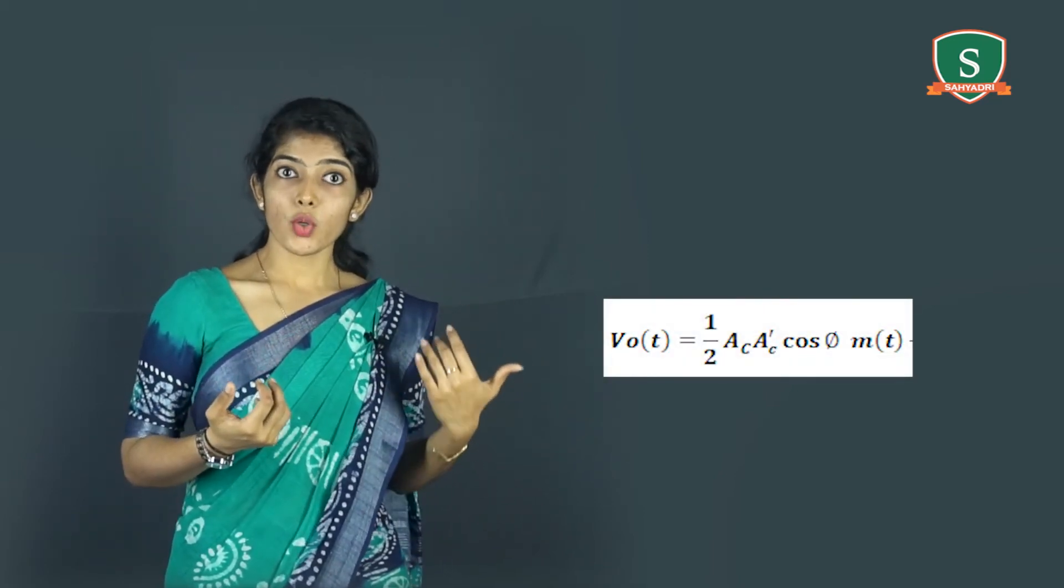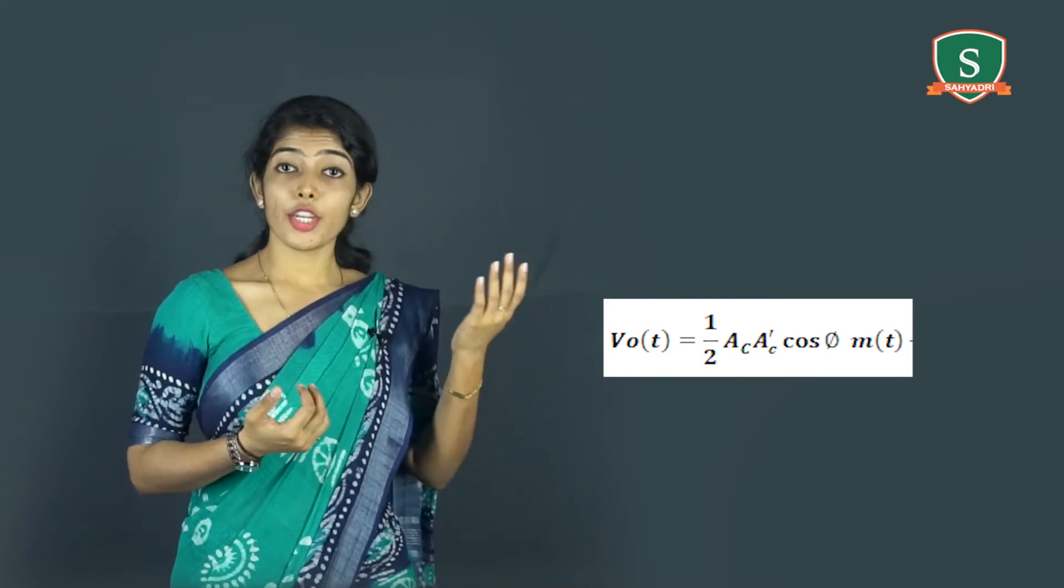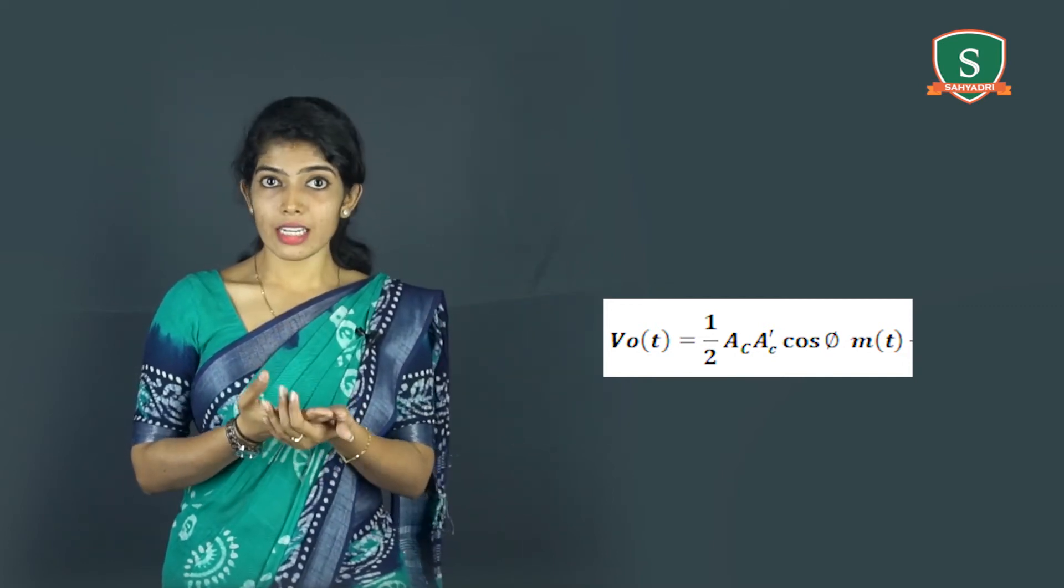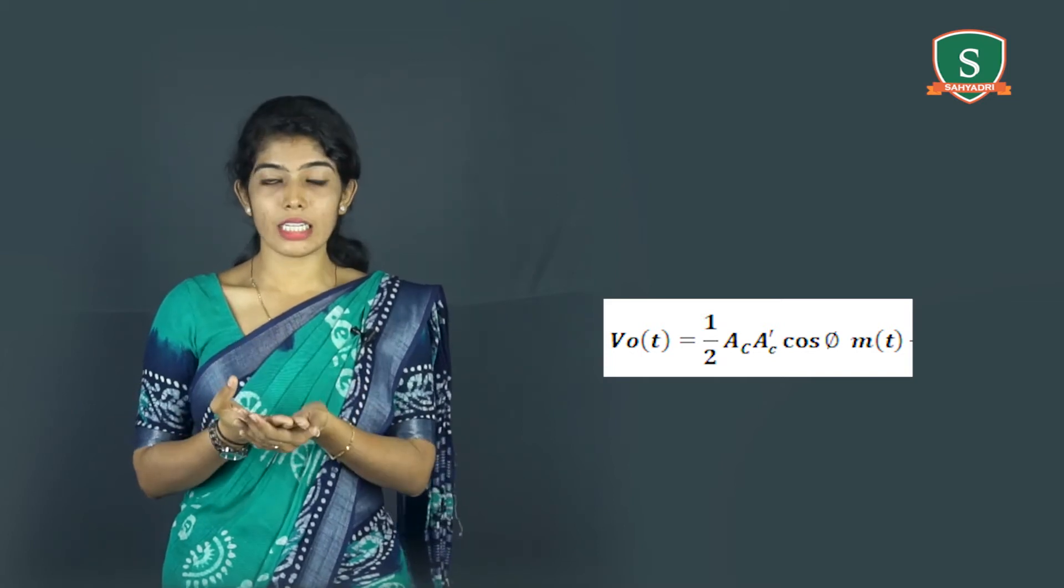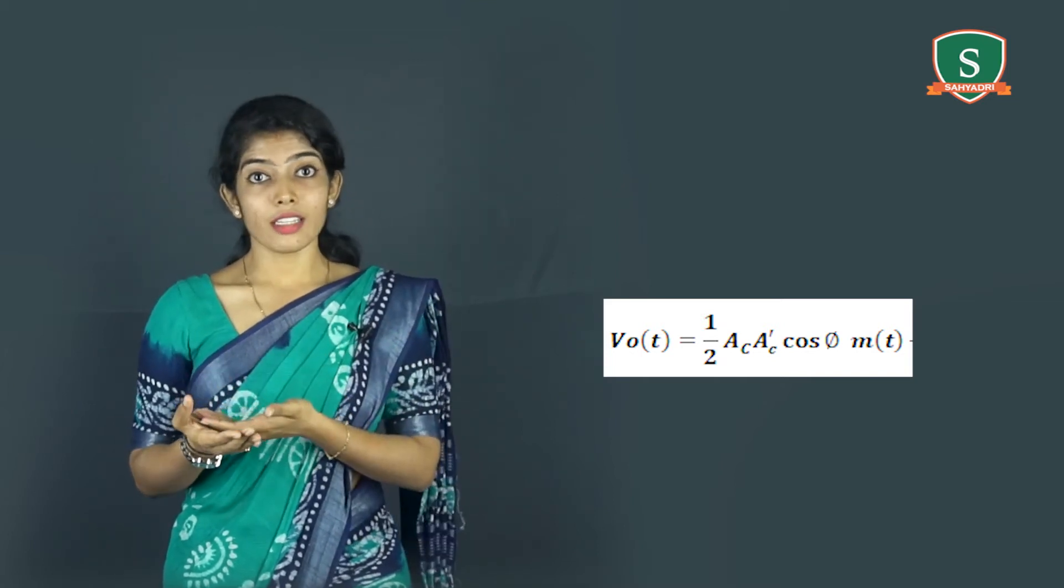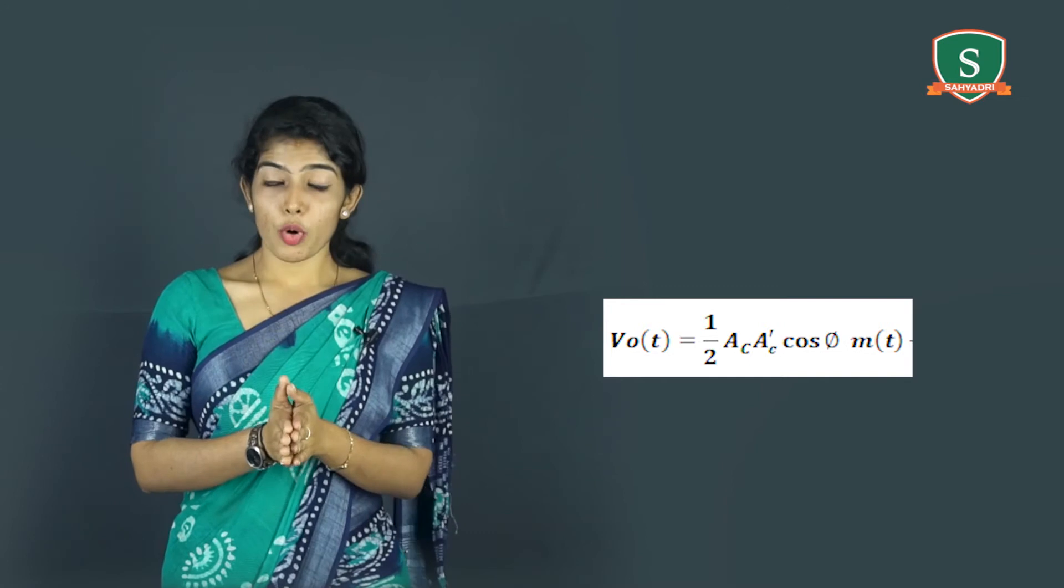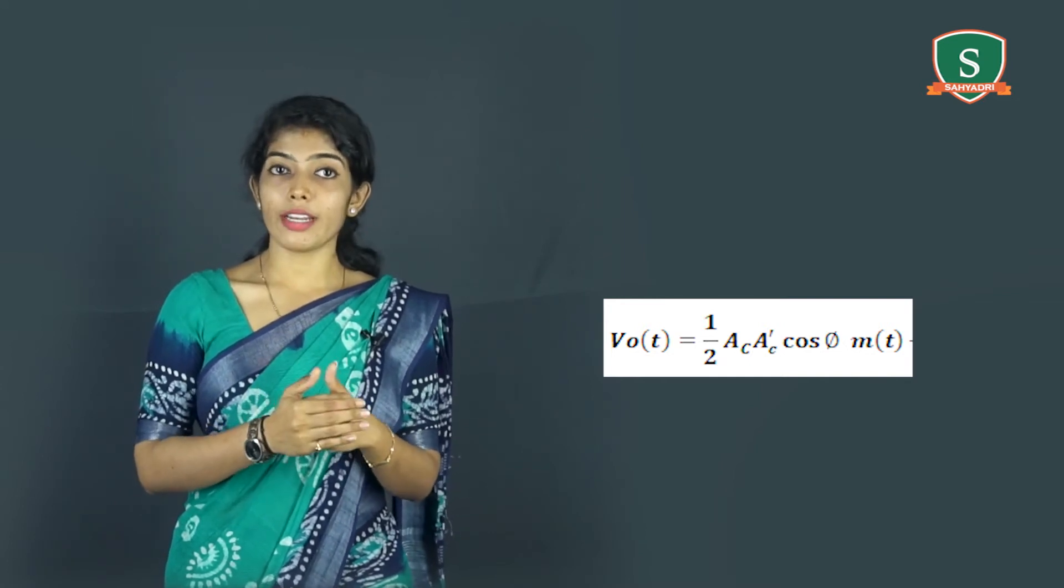At the filter output we then obtain a signal given by V₀(t) = (1/2) Ac Ac' cos(phi) m(t). The demodulated signal V₀(t) is therefore proportional to the message signal when the phase error phi is constant. The amplitude of this demodulated signal is maximum when phi